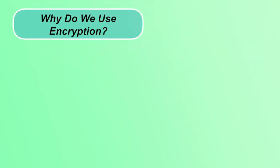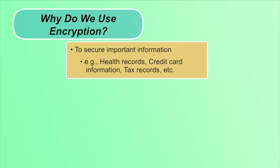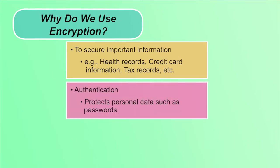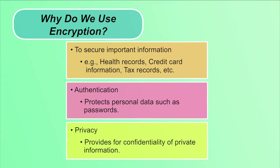Encryption is used to secure health records, credit card information, tax records, etc. If this information is not encrypted, anyone can misuse our personal information. Our debit card numbers and names are stored in encrypted form. It is also used to protect credentials used for authentication — usernames and passwords are stored in encrypted form. Encryption maintains privacy and provides confidentiality to our private information.